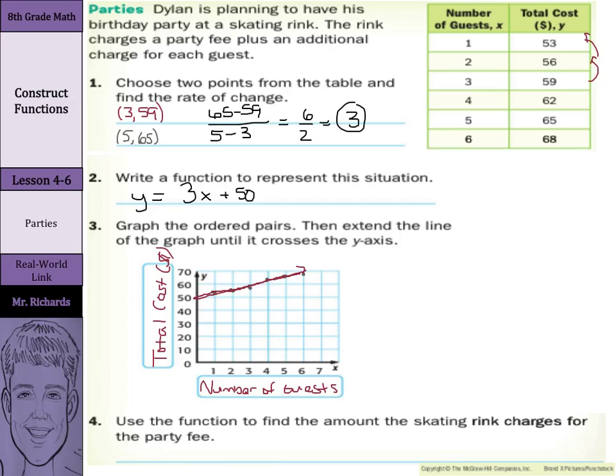Fourth, use the function to find the amount the skating rink charges for the party fee. When you have no guests you still have to pay fifty dollars and then you're paying three dollars per each guest. That was our y-intercept in our function. This 50 represents the amount the rink charges for the party fee. So our answer is fifty dollars.